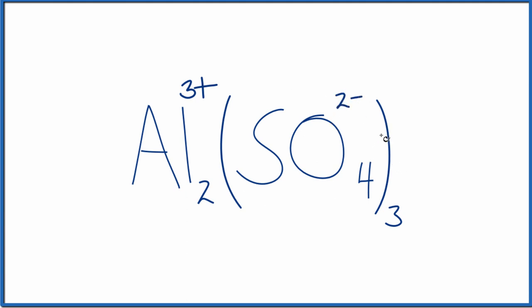And since this is an ionic compound, we want the charges to add up to zero, have a net charge of zero. 2 times 3+, 6+. 3 times 2-, 6-. 6+ and 6-, that gives us zero. So this is the compound aluminum sulfate.